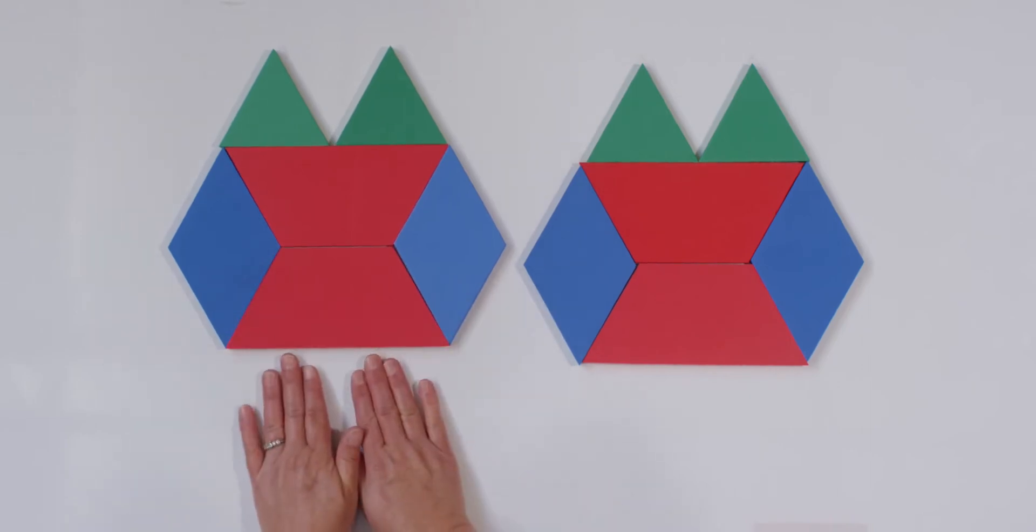Does your shape look identical to my shape? Do both of my shapes look identical to each other? They do, don't they?